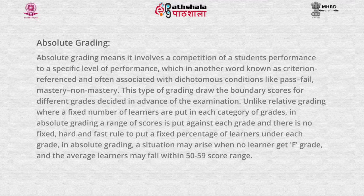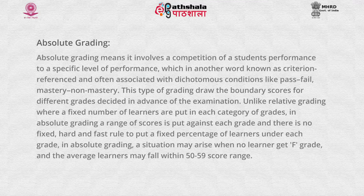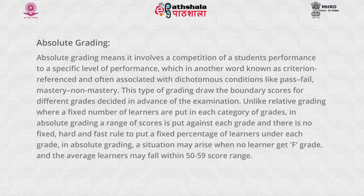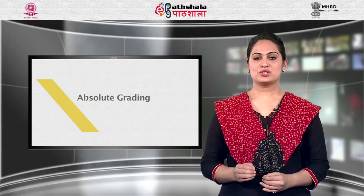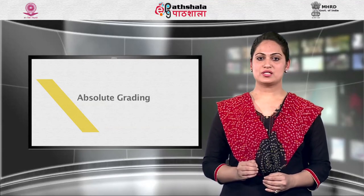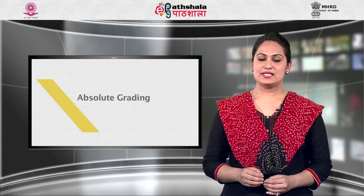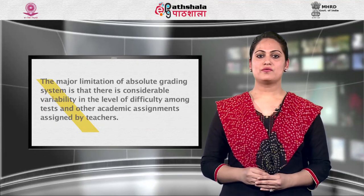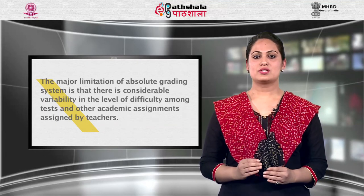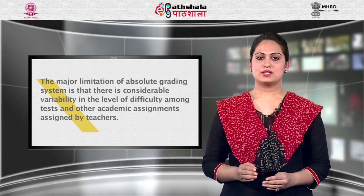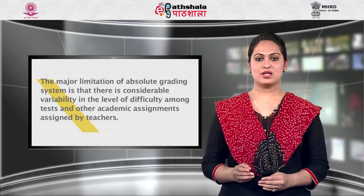This type of grading draws boundary scores for different grades decided in advance of the examination. Unlike relative grading where a fixed number of learners are placed in each grade category, in absolute grading a range of scores is put against each grade with no fixed rule to place a fixed percentage of learners under each grade. A situation may arise where no learner gets an F grade and average learners may fall within the 50 to 59 score range. One of the most common absolute grading systems is the traditional percentage-based system.